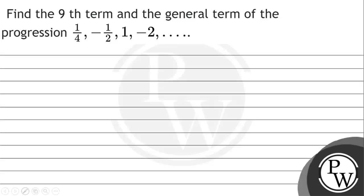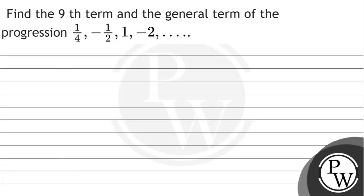Hello, let's read this question. The question says: find the 9th term and the general term of the progression 1/4, minus 1/2, comma 1, comma minus 2, dot dot dot.